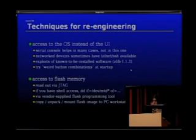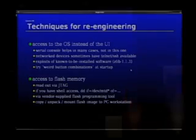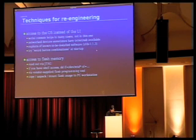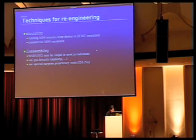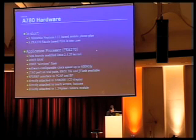Access to flash memory over JTAG is also a possible attack vector — if you have working JTAG, you can read out the flash memory. If you have shell access, you can copy whatever MTD devices you have. You can also sometimes use vendor-supplied flash programming tools to read files. If you have a copy, you can unpack, mount, and work with it on a PC workstation. You can also run ARM binaries in QEMU software emulation, or use commercial ARM emulators and disassemblers like IDA Pro.